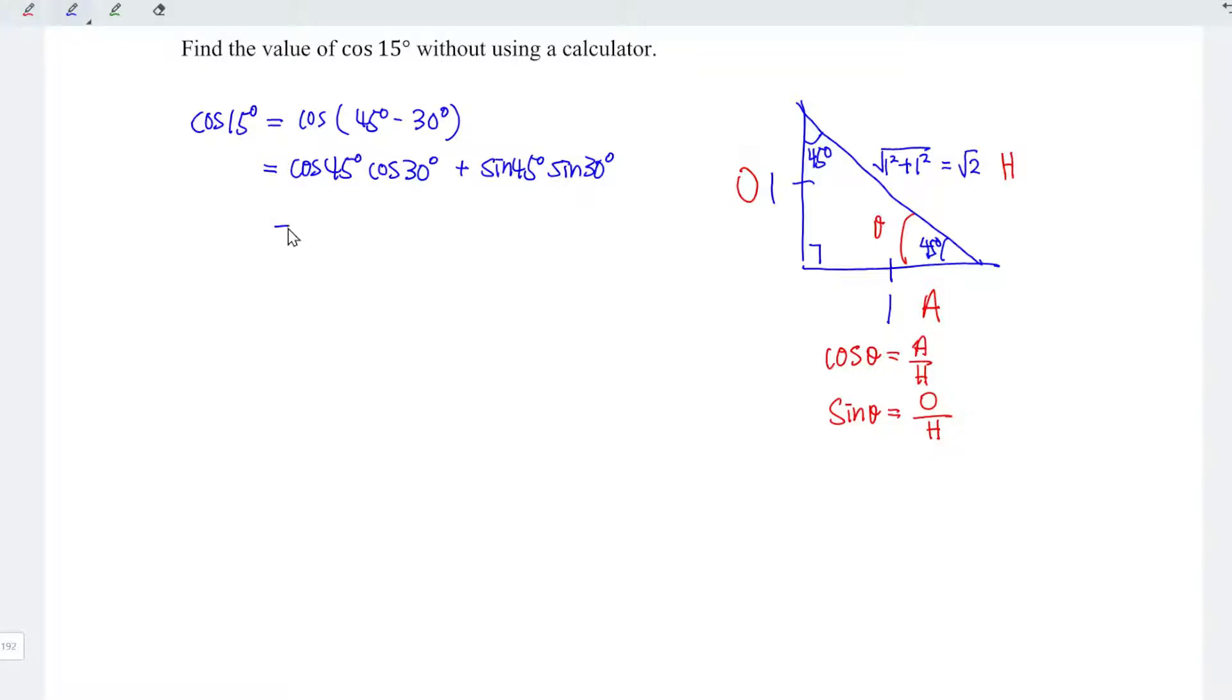So which means that cos 45 degrees, since 45 degrees is here, equals adjacent, which is one, divided by hypotenuse, which is square root of two. And for sin 45 degrees, we have opposite, which is one, divided by hypotenuse, which is square root of two.